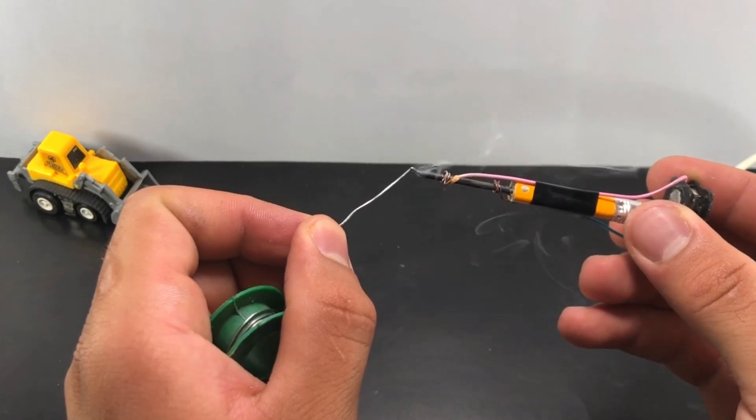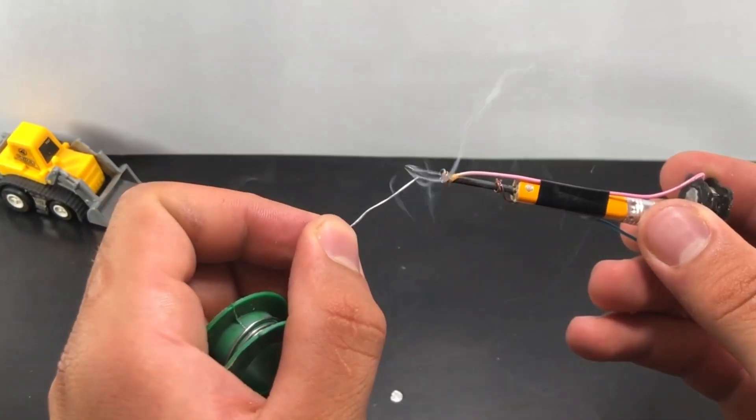As you can see, the pencil soldering machine easily provides the desired heat to melt the solder wire.